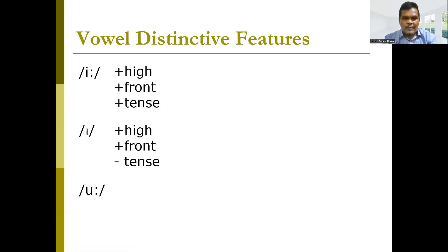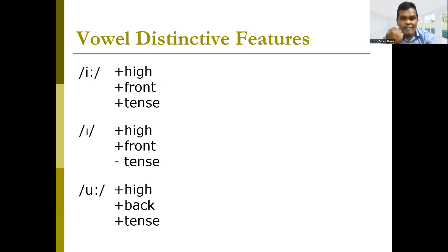The next vowel is /uː/. /uː/ is described as a high vowel, but it is not in the front position — because we need to retract the body of the tongue, moving it back. So it belongs to positive back: positive high and positive back. Additionally, /uː/ is tense, so we assign positive tense. Therefore, /uː/ is described as a high, back, tense vowel.